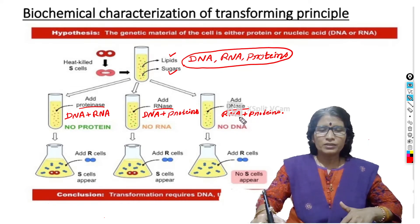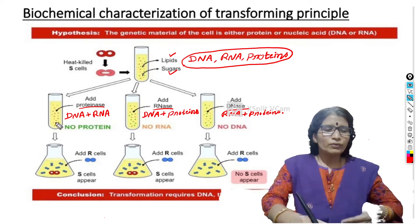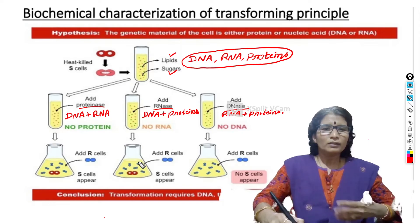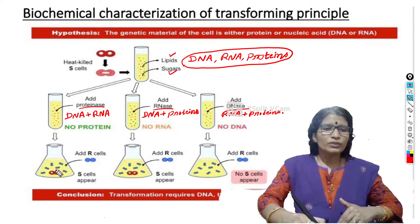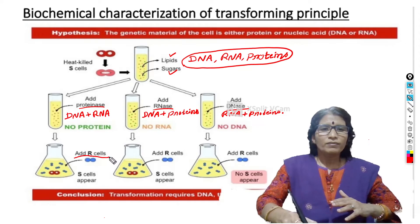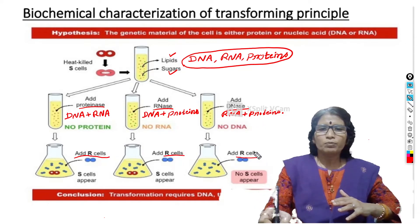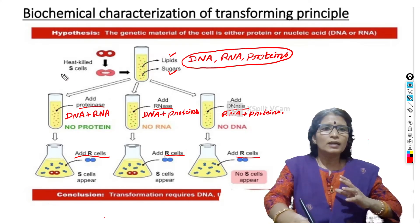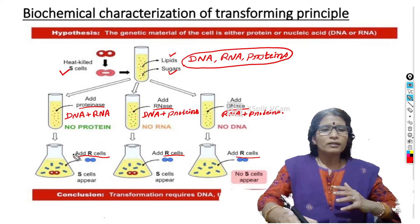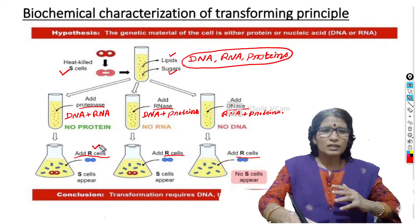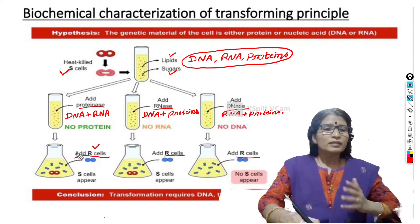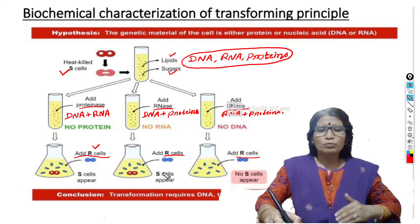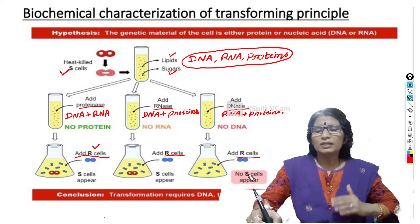These solutions were then transferred into conical flasks, and scientists added rough cells to each solution. After one day, they observed that in the first test tube solution (DNA and RNA present, protein digested), smooth cells appeared. In the second test tube solution (DNA and proteins present, RNA digested), smooth cells also appeared. But in the third test tube solution (RNA and proteins present, DNA digested), smooth cells did not appear.